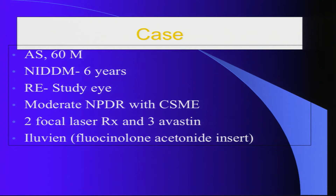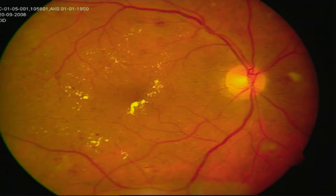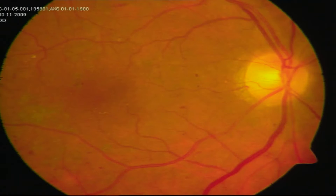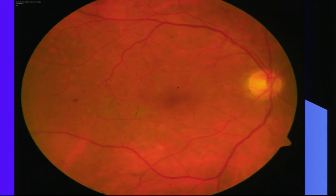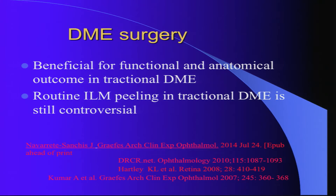Chronic DME is the biggest problem for us. We don't currently have the drug Iluvien in India, but in a clinical trial where we enrolled the maximum number of cases in the world, you can see that after Iluvien everything was resolved in a chronic case. This drug has been approved in more than 20 countries, including Europe and the US, for chronic DME — we really wish we get this drug.